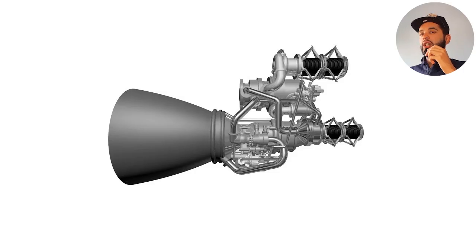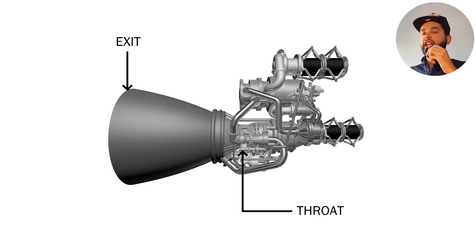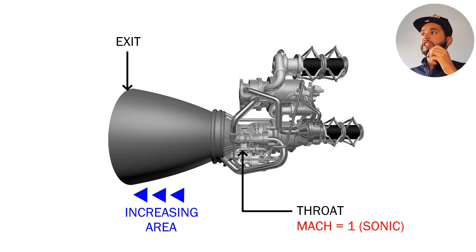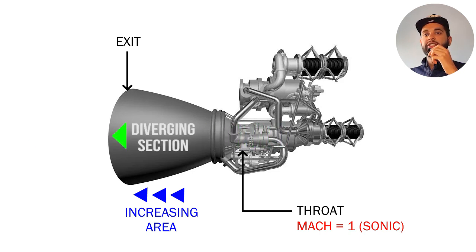Just to recap, a rocket engine consists of a converging section and a diverging section. When the engine starts, the flow in the nozzle remains subsonic until it gets to the midsection where the Mach number equals 1, or it reaches sonic speed. At this point the flow in the diverging section will accelerate because in supersonic compressible flows the velocity is directly proportional to the area.